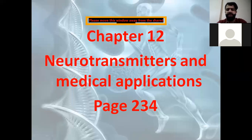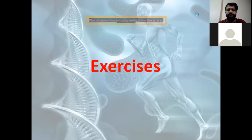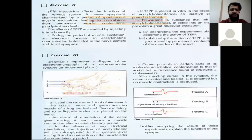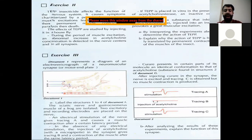Good morning Grade 12 students. In this session we'll continue with Chapter 12 exercises on pages 245, about neurotransmitters and medical applications. Last session we solved exercise two talking about TEPP, its function, and the acetylcholine neurotransmitter which has an excitatory role. We also talked about acetylcholinesterase, the enzyme used to degrade acetylcholine and inhibit its function.